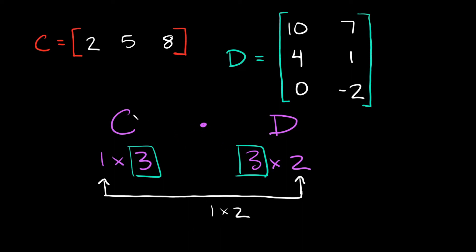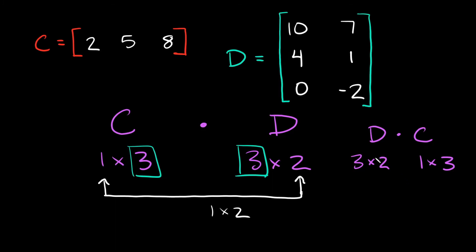Now one last thing I want to point out: what if I flipped C and D? What if I wanted to multiply D times C? Could I do that? Well, D is a three by two, and C is a one by three. Would I be able to multiply D times C? No, I wouldn't, because these two numbers right here don't match — they're not equal to each other. So I would not be able to multiply D times C, but I can multiply C times D. With matrices, order matters.